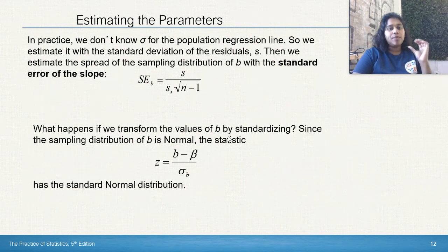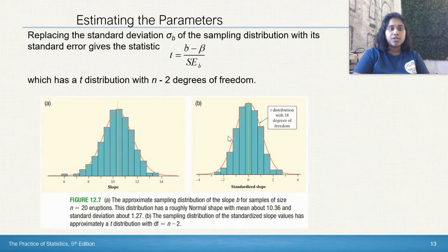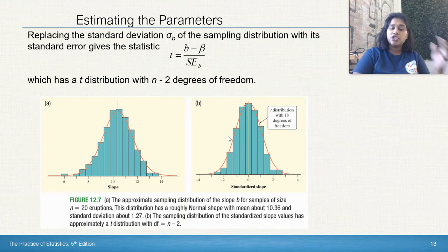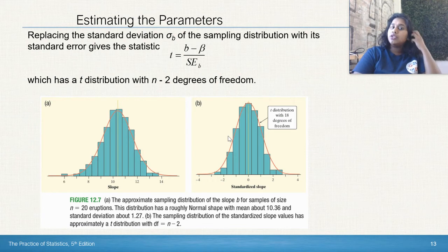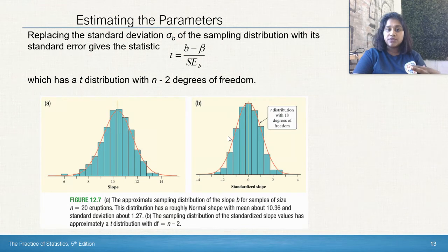Standard error of the slope, again, refers back to older chapters. Here is that z statistic, again, referencing back to older chapters. If we want to replace the standard deviation of the sampling distribution with its standard error, we can use our t statistic where we take the b minus beta all over the standard error of b, and we get a t distribution with n minus 2 degrees of freedom.